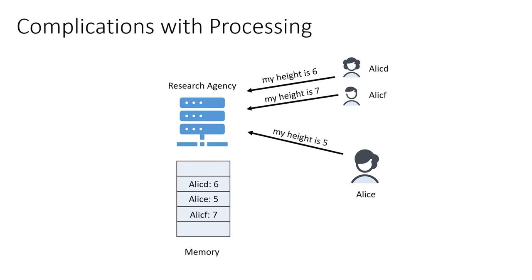Once you have collected everything, you store it in an array, and for ease of access, you sort the array by the name of the person. Now, after you have all this, Alice comes along and says she wants you to delete her data — delete whatever you have, delete her height.